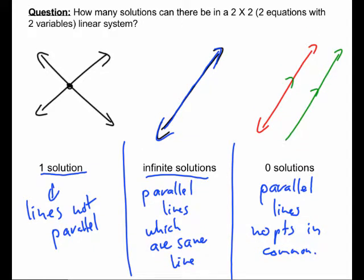The key to determining the number of solutions in a linear system is to consider the slopes of the two lines. If the slopes are different, the lines will not be parallel and will intersect. If the slopes are the same, the two lines will be parallel, giving either an infinite number of solutions or no solutions. You distinguish between those because the same-line case shares the exact same equation, while the no-solution case will have a different y-intercept.